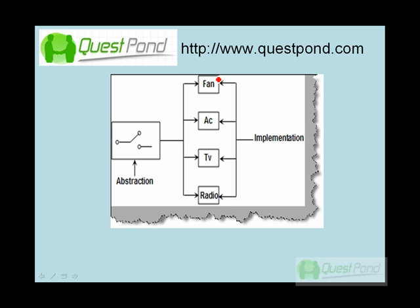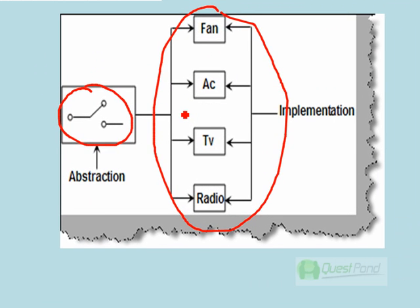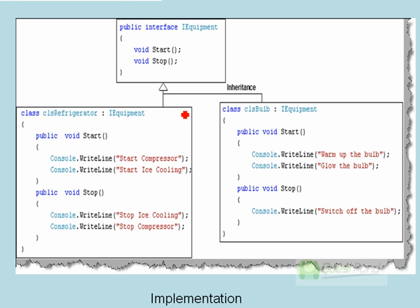Here's an example. You can have any kind of electronic equipment, and the abstraction for those equipments is a switch — it has on and off. The implementation can be a fan, AC, TV, or refrigerator. If I need to start a fan, I just say 'on'; to stop it, I say 'off'. The switch is a generalized abstraction that can start and stop any kind of equipment. Tomorrow, if I add new equipment, I should be able to do so without changing the switch.